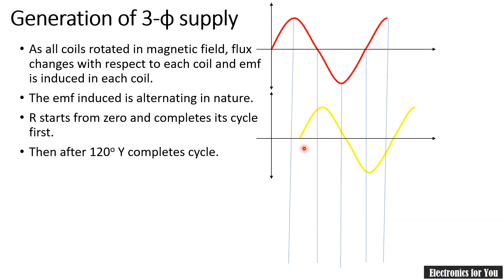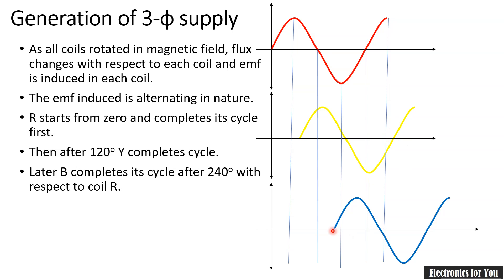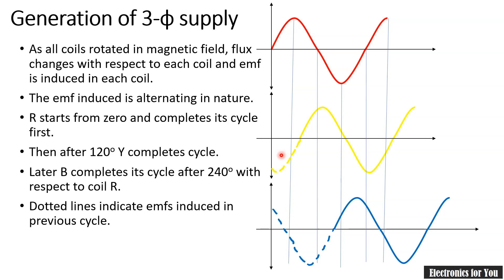The third conductor is again 120 degrees away from yellow, or 240 degrees away from the red. So the blue wire will generate an EMF accordingly. We can denote this as Er, the EMF generated by the red coil, Ey as the EMF generated by yellow, and Eb as the EMF generated by blue. If we complete this cycle we will get the full three phase waveform, where the dotted lines indicate the EMF induced in the previous cycle.